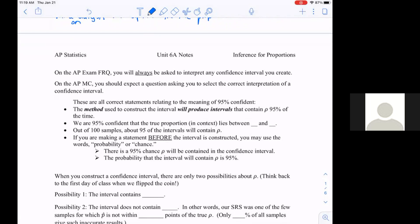On the multiple choice, you should expect to be asked to select the correct interpretation, which I absolutely hate because there's always some little fine detail about the response that made it not accurate. A lot of times these are all correct statements relating to a 95 percent confidence something. The first one's a level, the second bullet is an interval, the third one is again like a level.